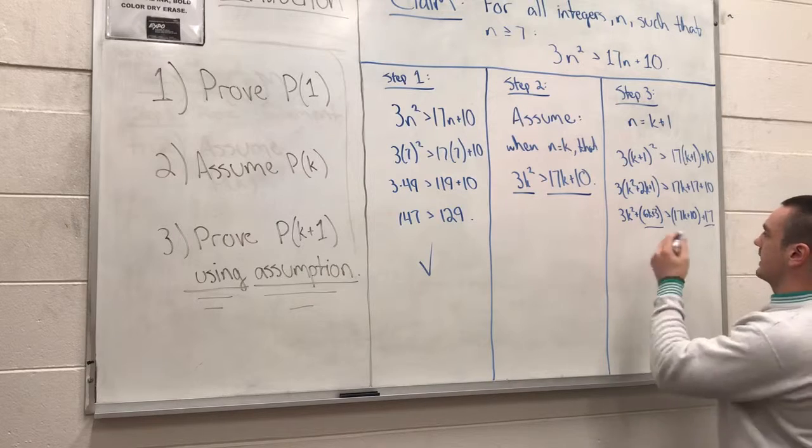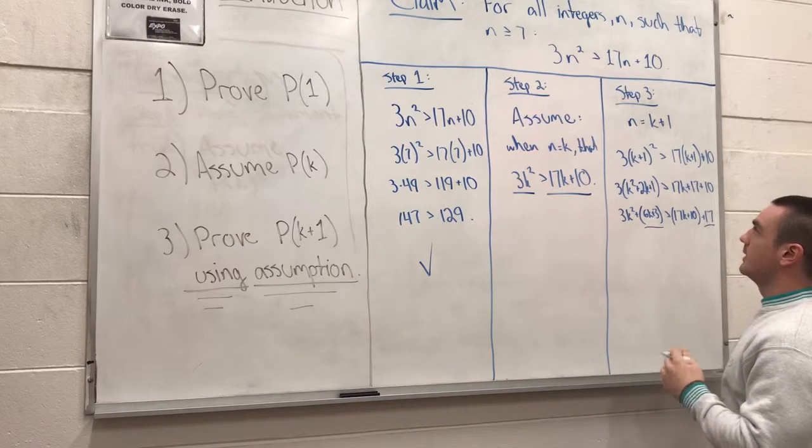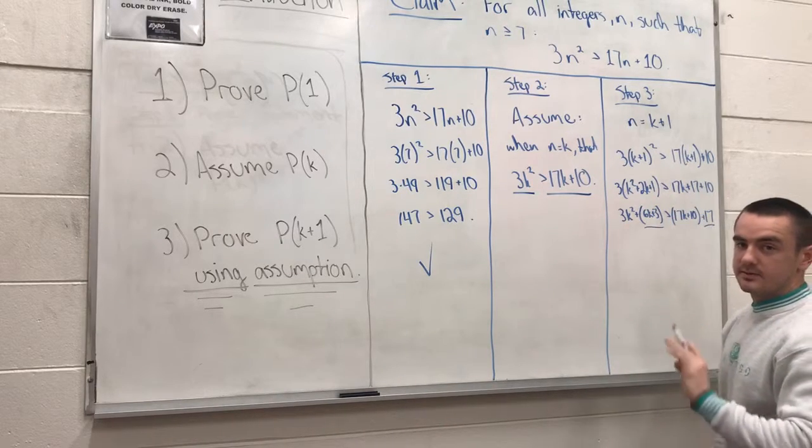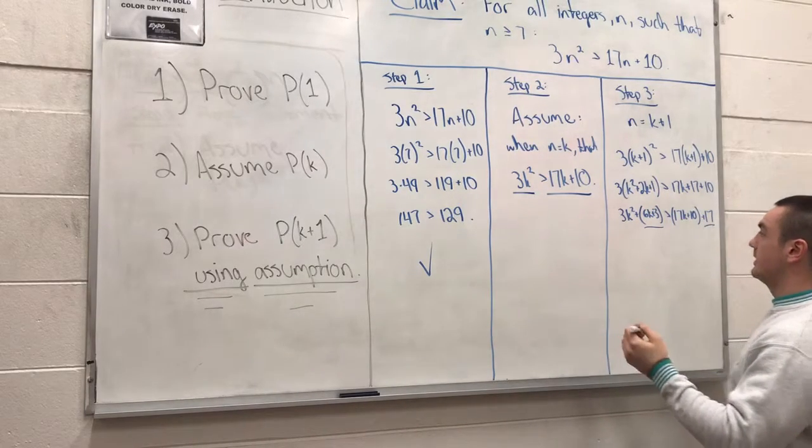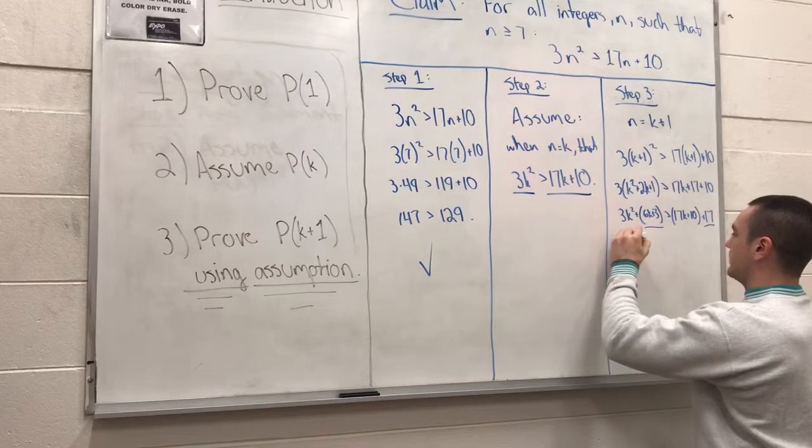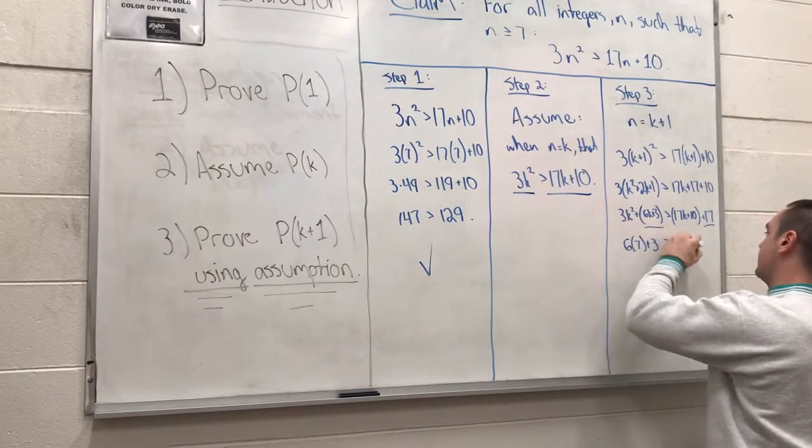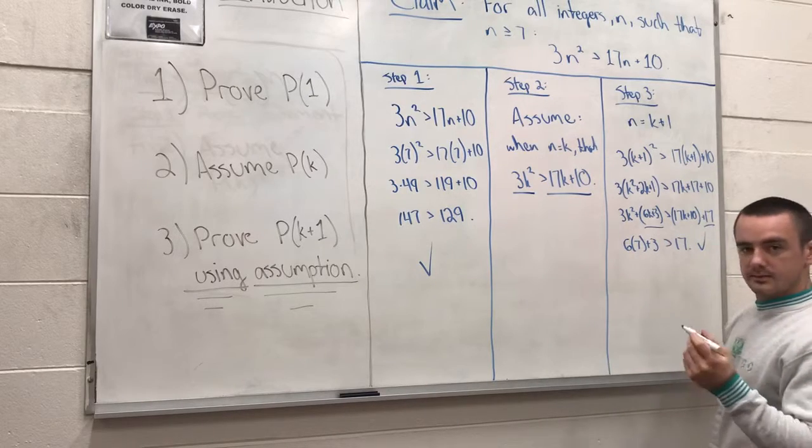Now we take 6k plus 3 and 17. One important thing to remember is that n is going to be greater than or equal to 7, so the smallest value we can have is 7. Let's plug that in. We have 6 times 7 plus 3 is greater than 17. That works.